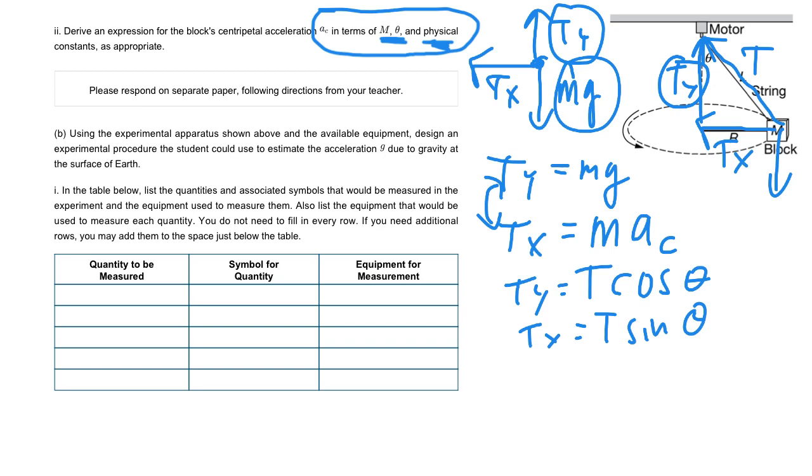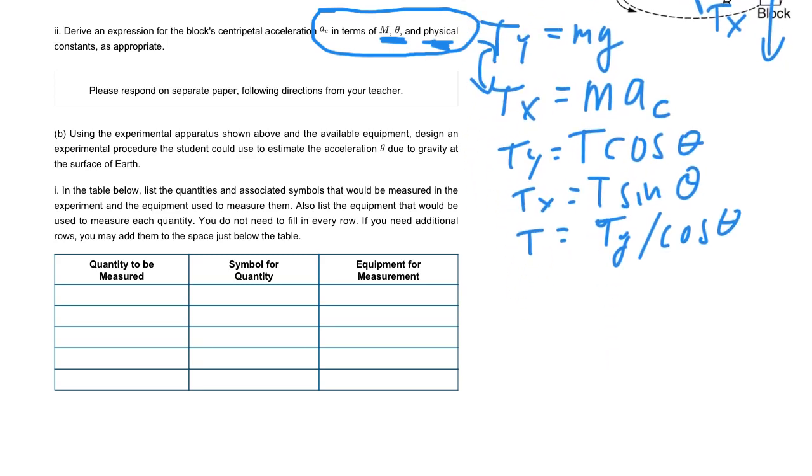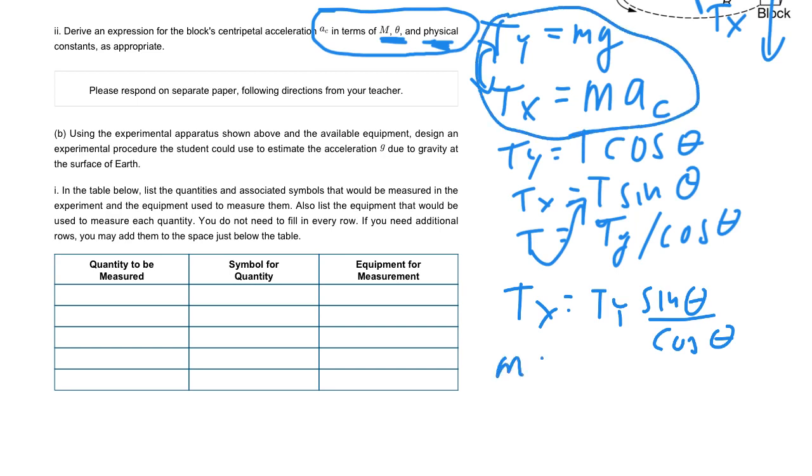Let's combine these together. Let's solve for TY. We'll write T equals TY divided by cosine of theta. Now we'll substitute this in. What are we going to get? TX equals TY sine theta divided by cosine theta.